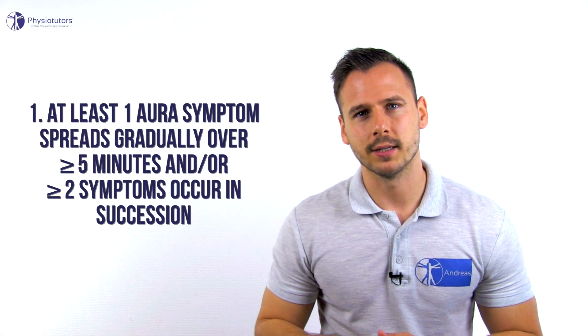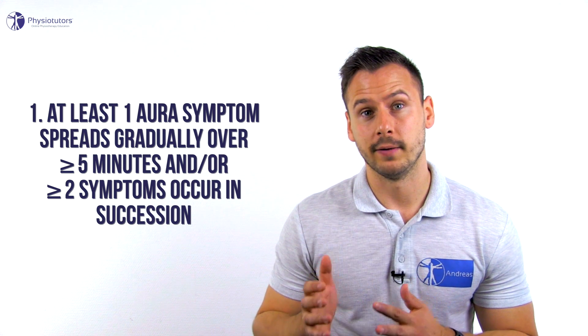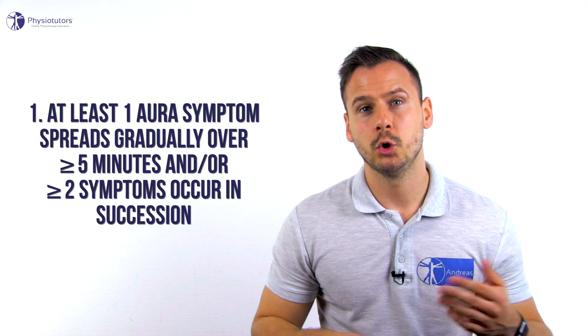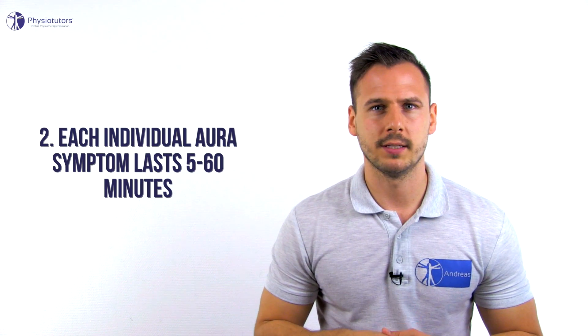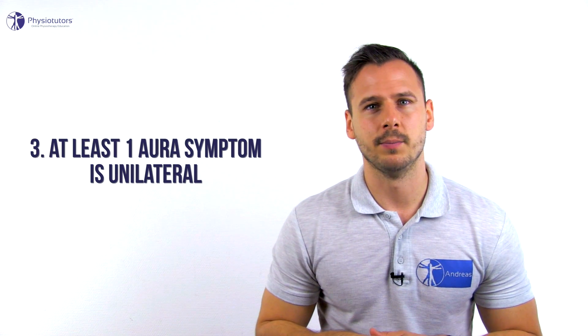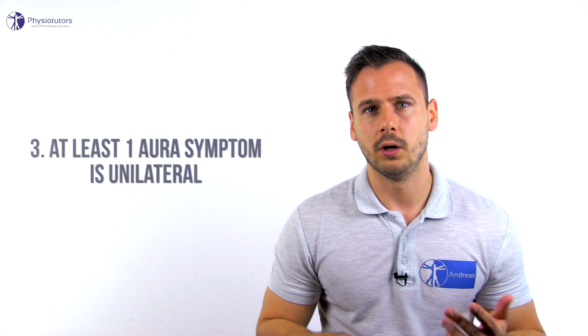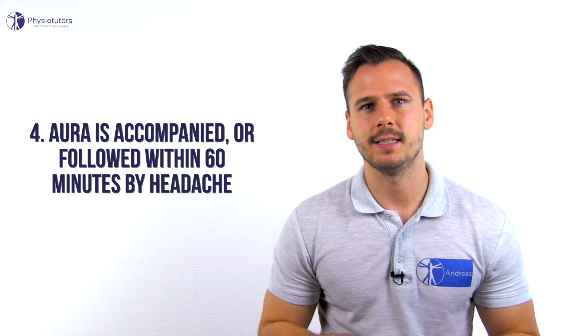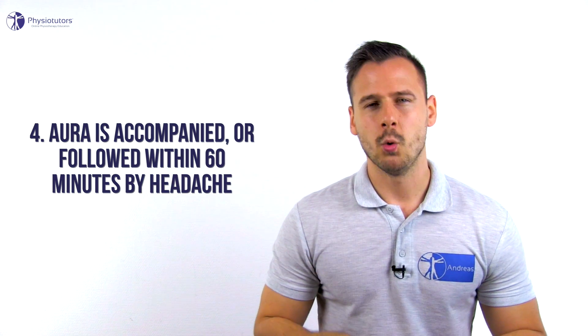Furthermore, at least two of the four characteristics have to apply. One, at least one aura symptom spreads gradually over more than five minutes, and/or two or more symptoms occur in succession. Two, each individual aura symptom lasts five to 60 minutes. Three, at least one aura symptom is unilateral. Four, the aura is accompanied or followed within 60 minutes by headache. While aura symptoms resemble those of a CVA, they build up much slower — over five minutes compared to within seconds in a CVA.